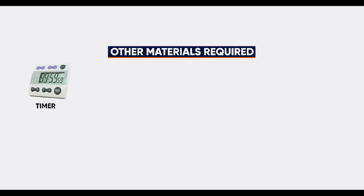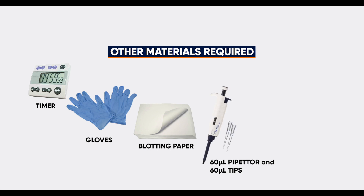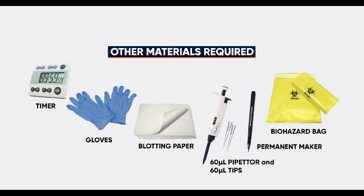In addition, the following materials are required but are not provided in the kit: a timer, gloves, blotting paper, a 60-microliter pipette and 60-microliter tips. Disposable pipettes of similar volumes can replace these. Also needed are a pen and sharp permanent marker.